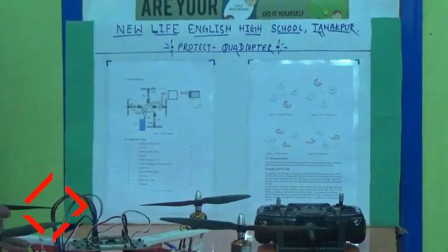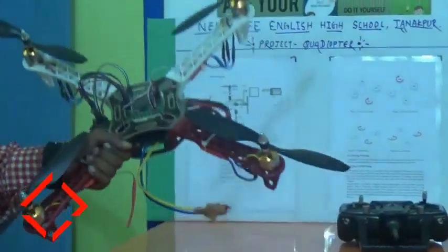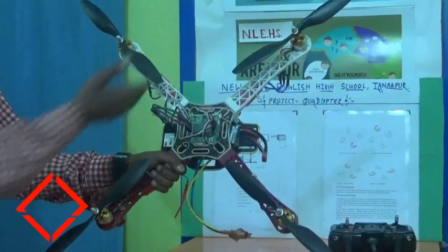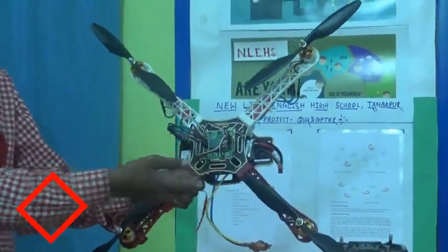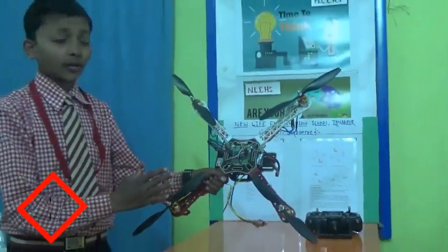You can make drones in various types like plus mode, T mode, and H mode. Here we have used X mode, which you can see here — it is easy to understand.